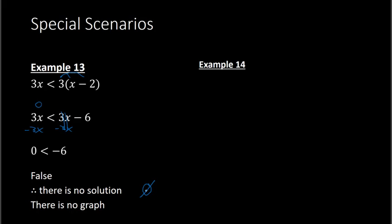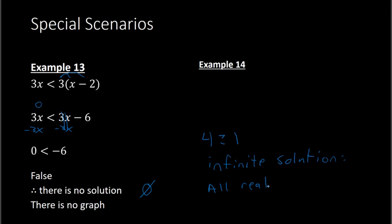One other special situation: if you solve all the way to the end and get a true statement — for example, instead of 0 is less than negative 6, let's say you had something like 4 is greater than or equal to 1 — that is a true statement. If you get the same kind of thing but with a true statement, then that means there is an infinite number of solutions. What we'd say is that our answer is all the real numbers. The shorthand way of writing this in math notation is a fancy R, and that means all real numbers. Be aware of those two special scenarios.